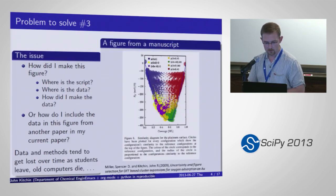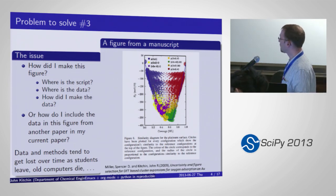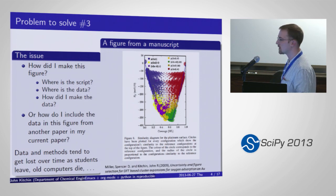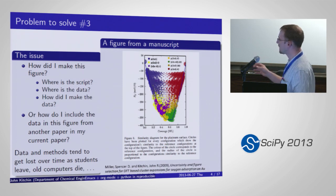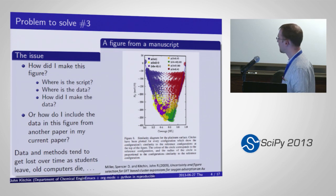The third problem I'll call 'how did I make this figure.' This is a figure from a paper we wrote a couple of years ago. I really like it, but I might ask: where's the script that made that figure? Where's the data from? How did I make that data? There's obviously a lot of data in it. And how would I include that data in another figure or another paper? This is already a few years old and hard to find. That's a problem that probably many people have that I've been trying to solve.